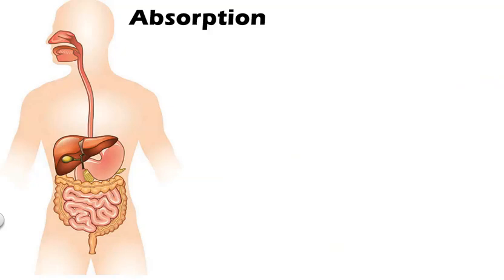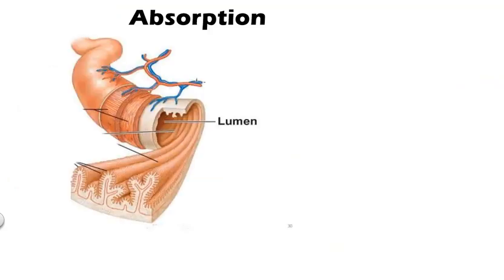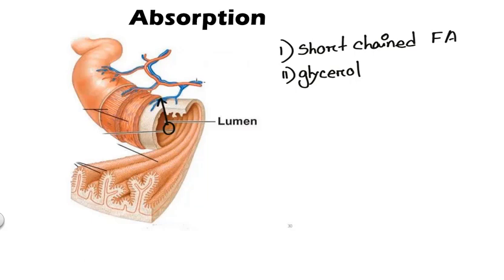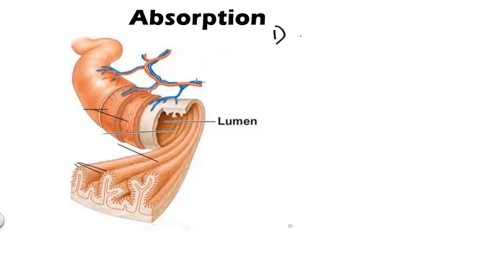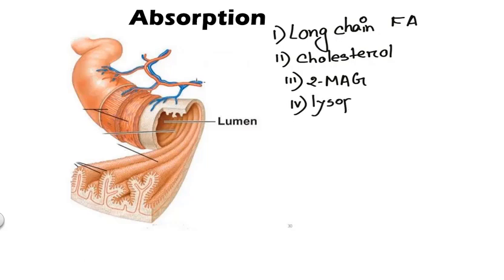So the products of lipid digestion are in your intestine ready to be absorbed. But how will they pass the barrier? The short chain fatty acid and glycerol are small molecules so they are directly absorbed in the blood. But the long chain fatty acid, cholesterol, two monoacylglycerol and lysophospholipids are large molecules so they can't cross the intestinal epithelial cell.